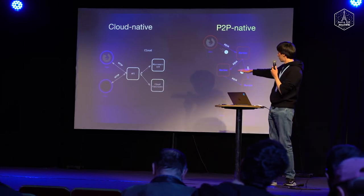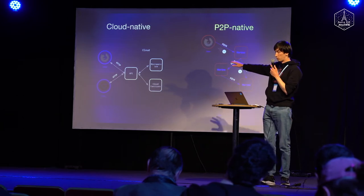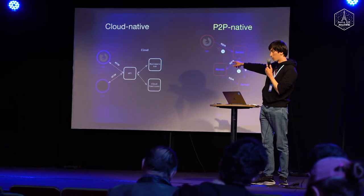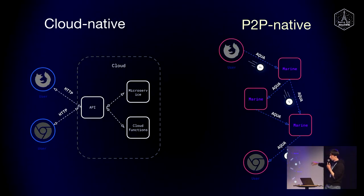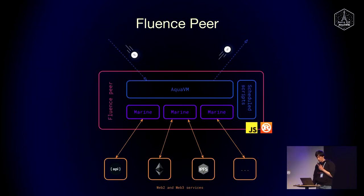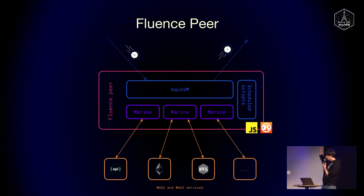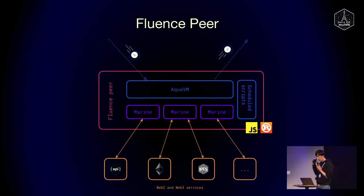In a traditional cloud backend, you have a centralized API gateway that talks to services on the backend. With Aqua, it's all served without any centralized coordination place. This is how a Fluence peer looks like. Every Fluence node basically runs Marine functions, has an AquaVM which gets requests, proxies them into execution of Marine functions, sends the result to whoever asked, and also has scheduled Aqua scripts that trigger Marine functions by time.